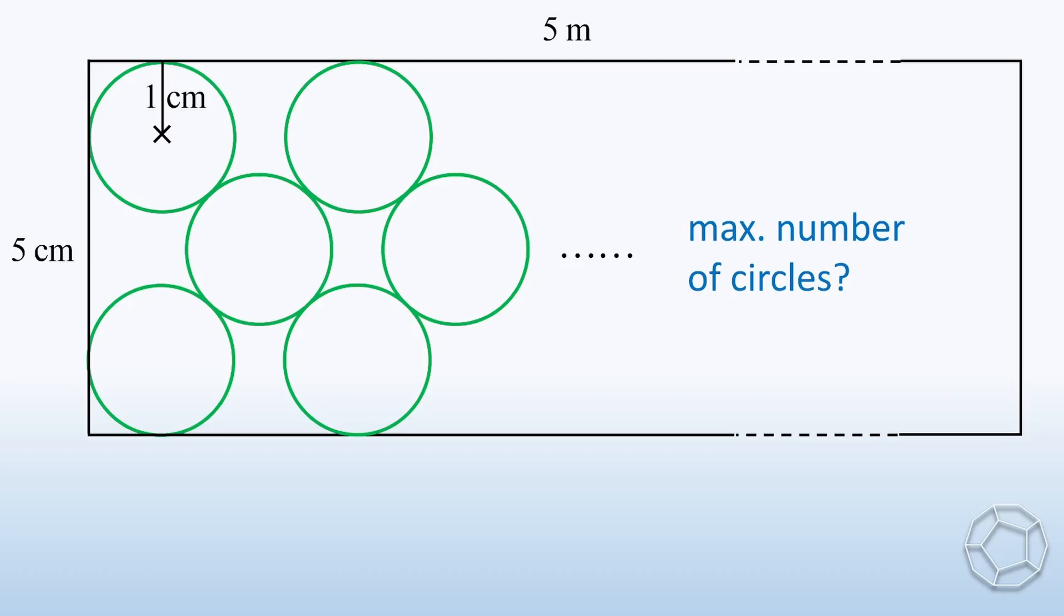To start with, we mark the centers of the circles. Construct the following line segments passing through the centers. Because the circles are of the same size, the distance between the dotted lines are equal. Now, we need to figure out the separation of these dotted lines.